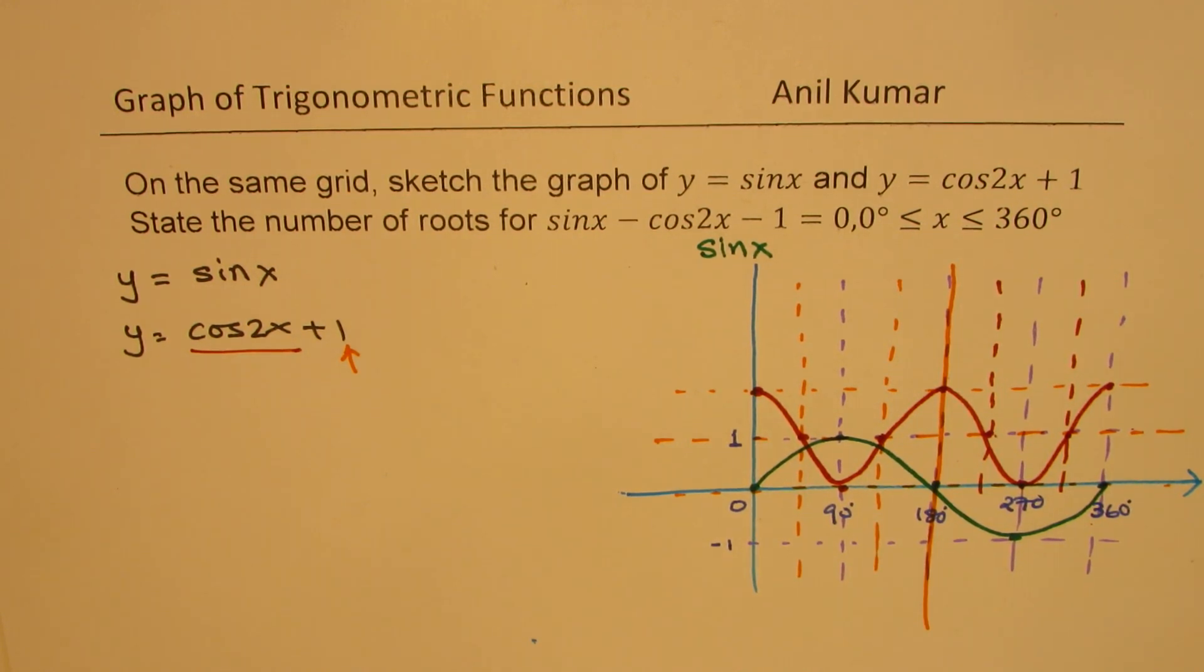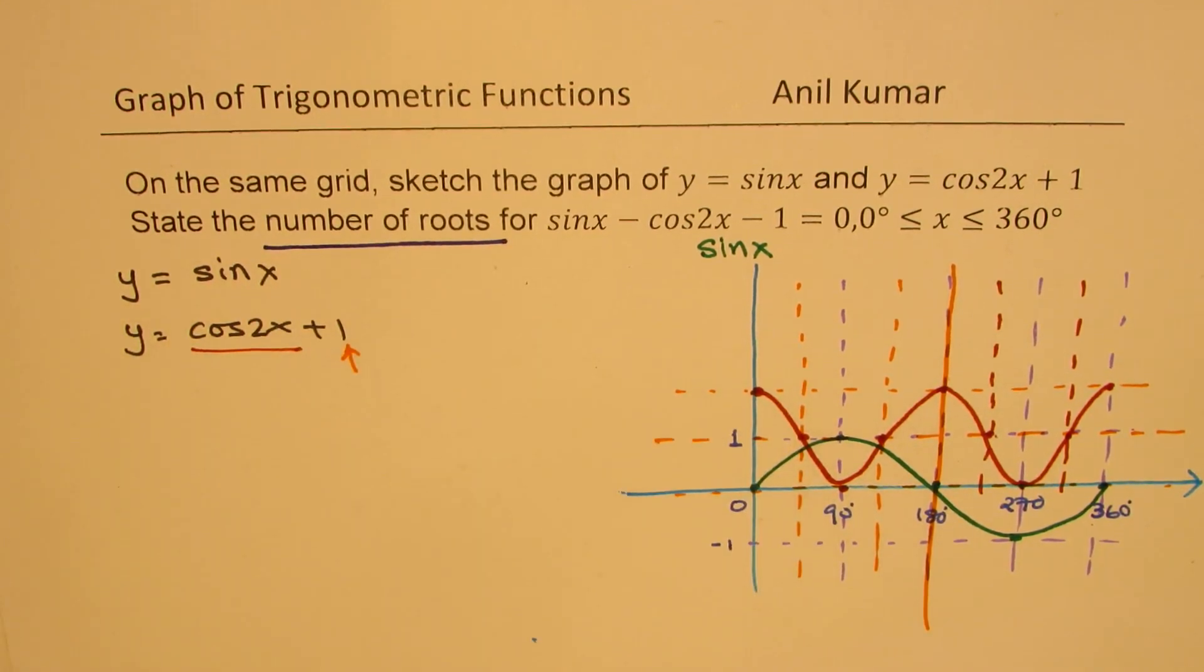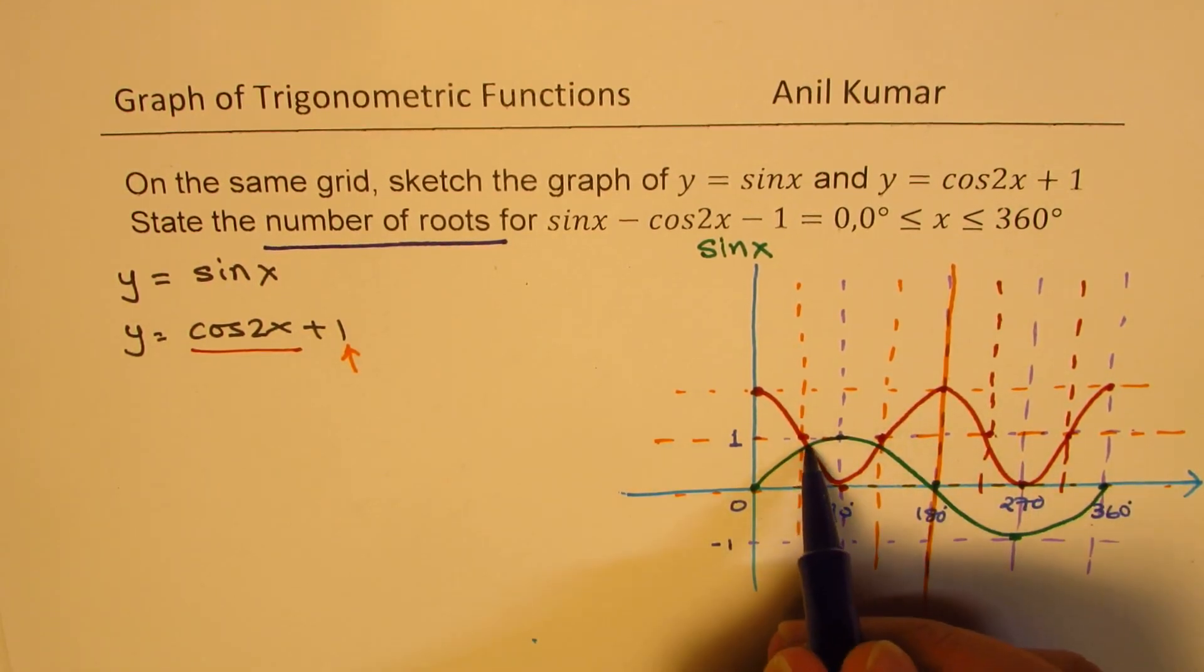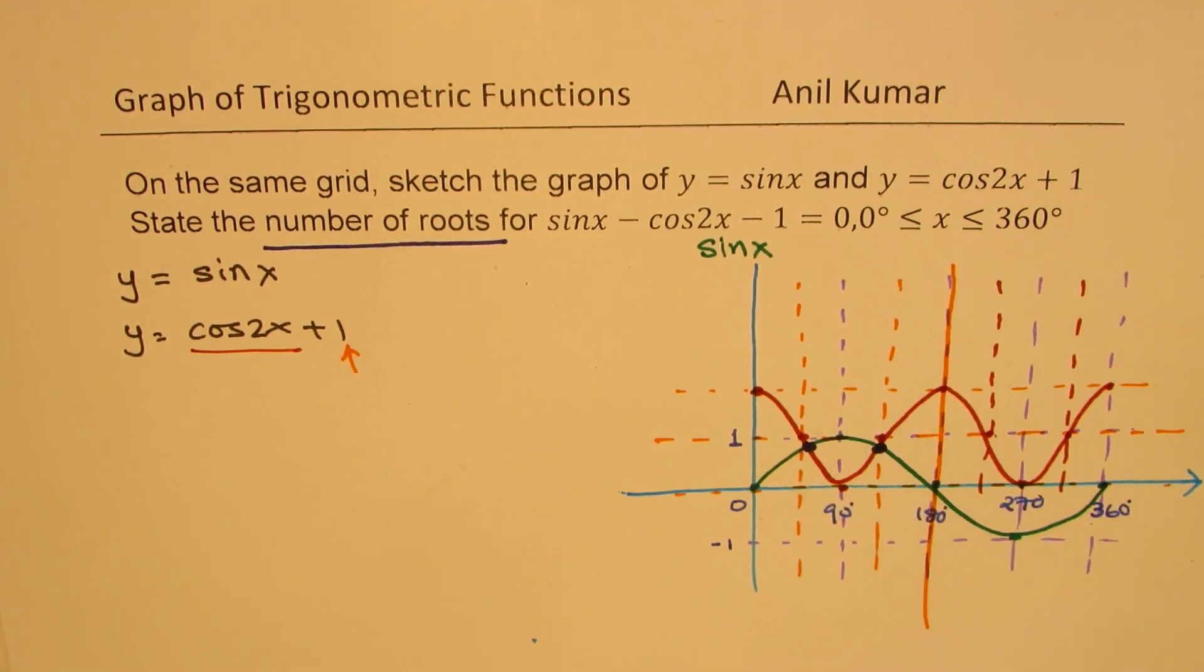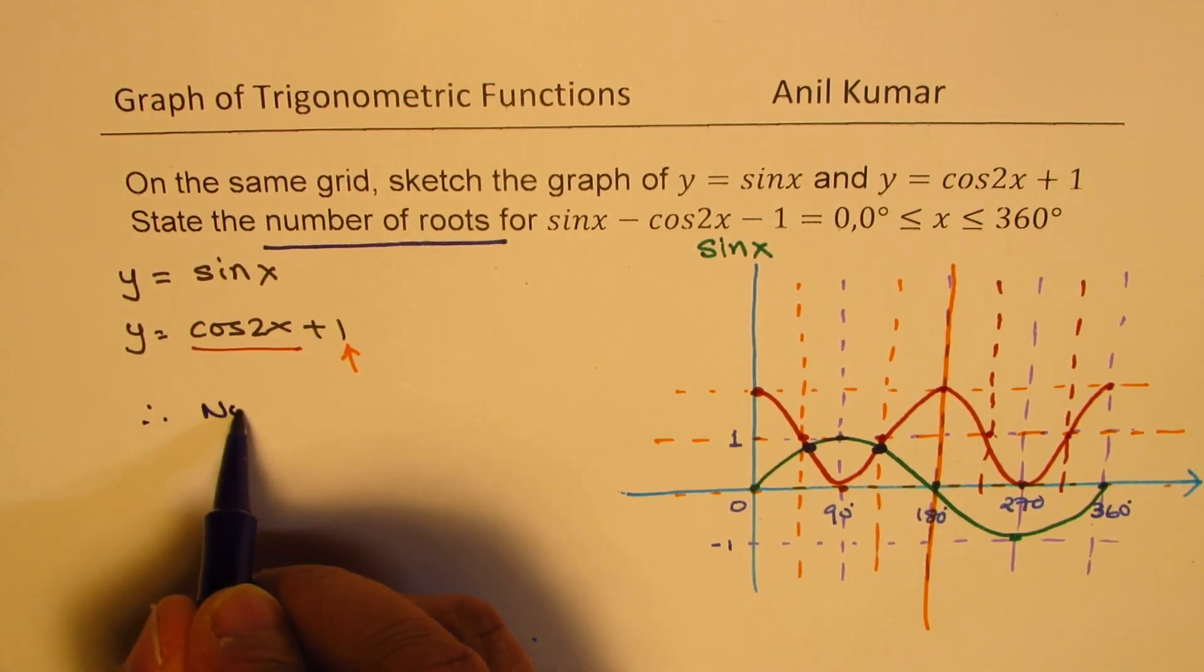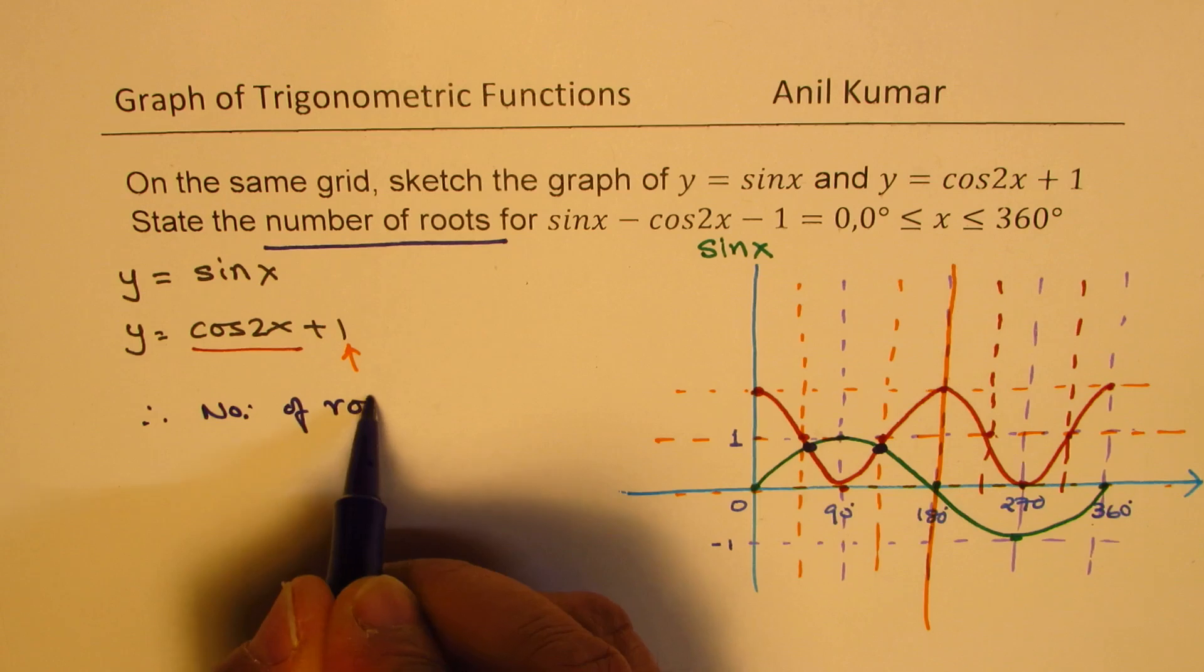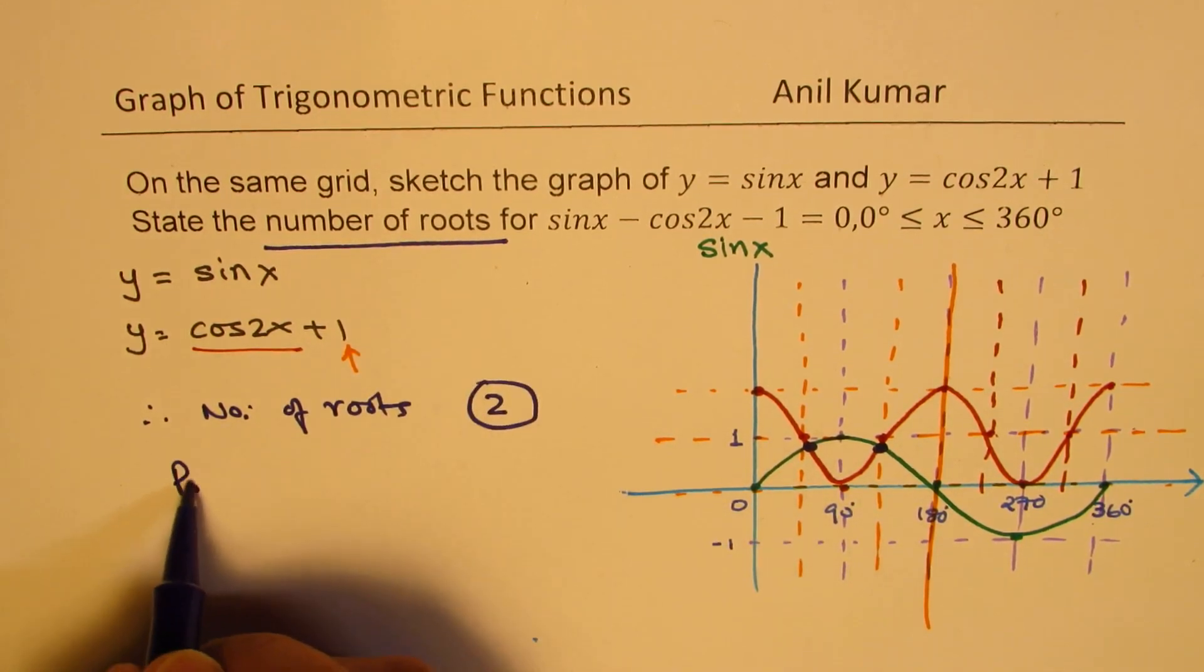Now, from here, we can find the points of intersection. So we are only interested in number of points of intersections. So as you can see, very clearly, there are two points of intersections. So that means we have two solutions. Therefore, number of roots is 2.